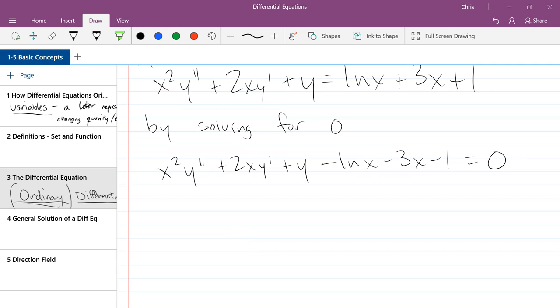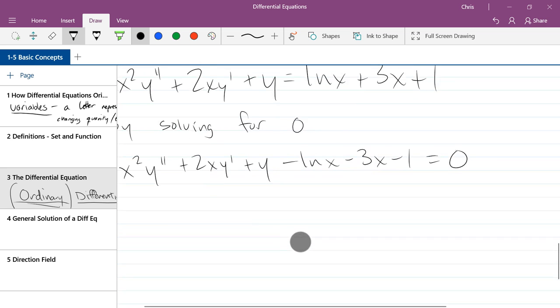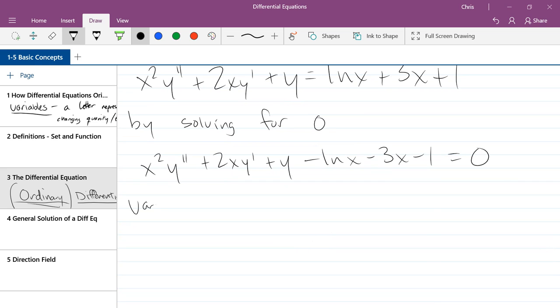So we have minus ln x minus 3x minus 1 equals zero. So in one sense, we could say the variables are x and y. Except there's also not just y, but there's a y prime and in this one there's a y double prime. So we could say there's really just two variables, but I'll write them all down. Variables. We definitely have x. We do have y, but let's write y as f of x. We have a y prime, which is f prime of x. And y double prime, which is f double prime of x.